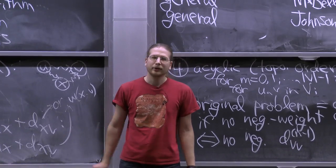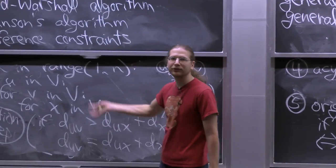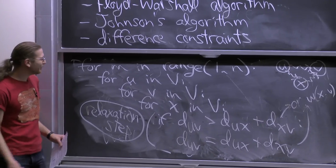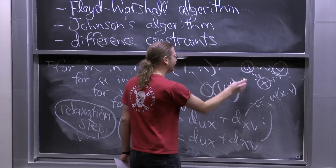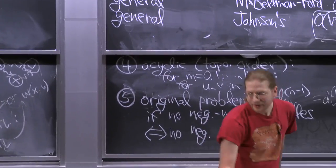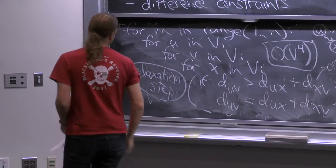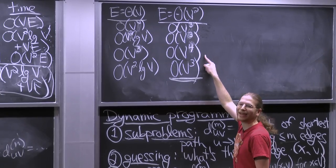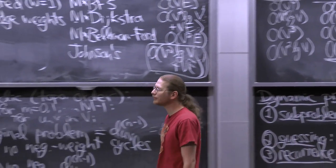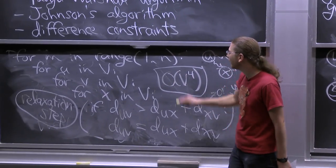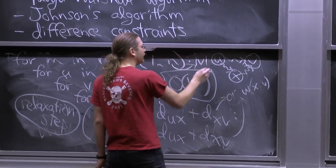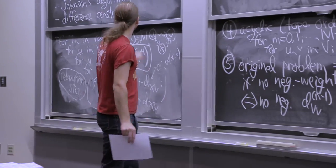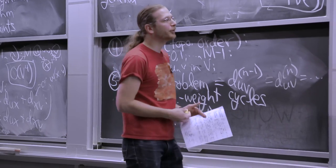I can omit the superscripts here because relaxing more can only help. If I had superscripts I'd need cubic space; without them I only need quadratic space. But how slow is this algorithm? It's V⁴. We have three for loops each going over V, and then the inner loop also goes over V. That's the same as just running Bellman-Ford V times — so we haven't actually improved anything. But at least you can see it's all dynamic programming.